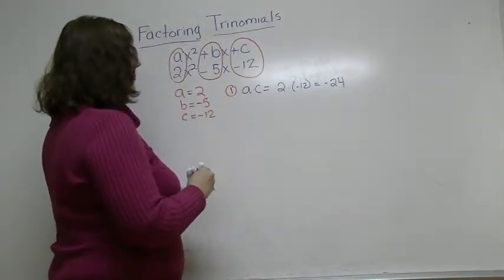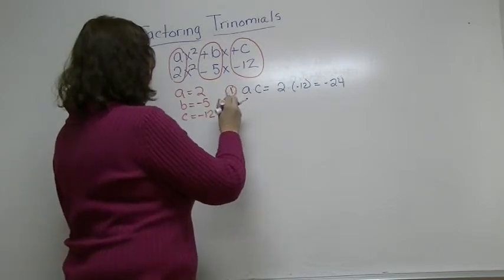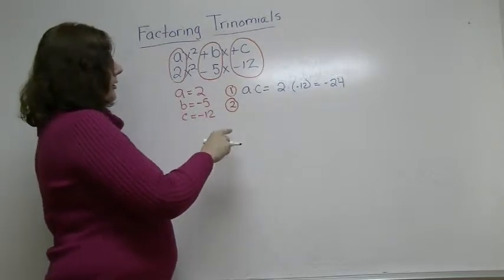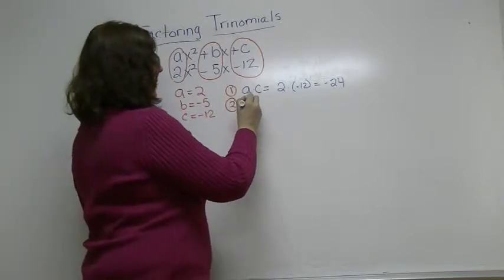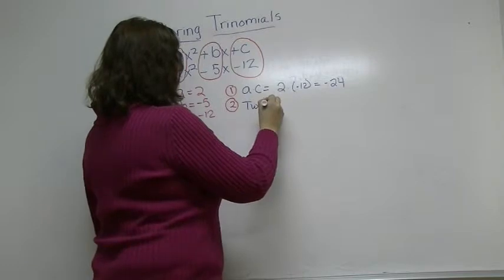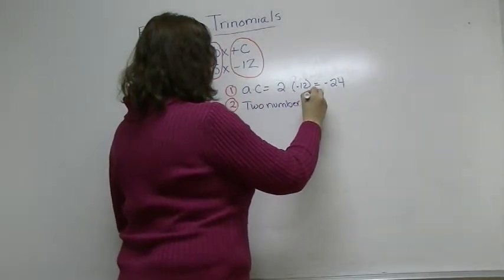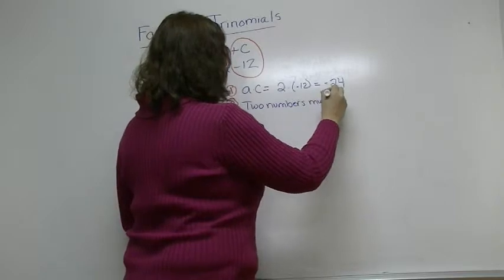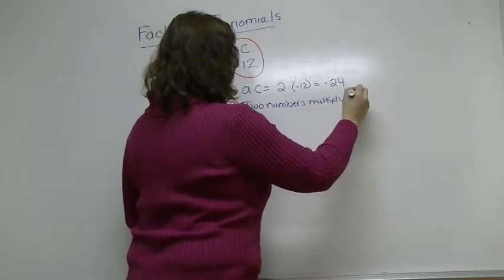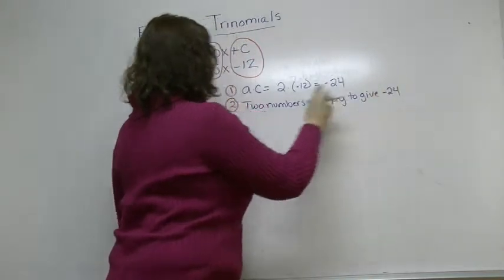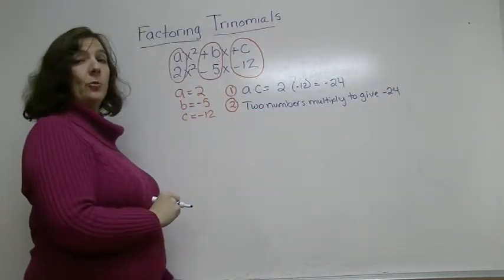Step 2 is to do what you normally do when you factor, which is you're going to think of 2 numbers that multiply to give you the number that you just found from step 1, negative 24.